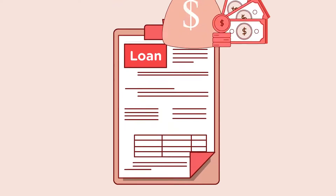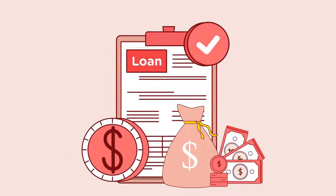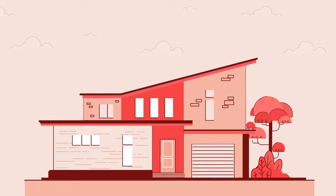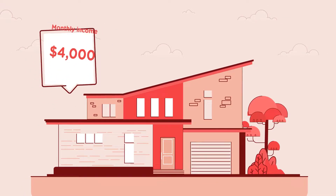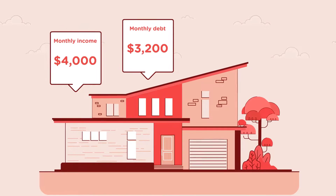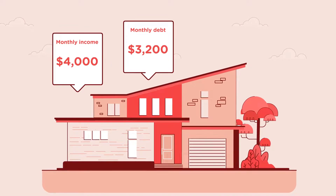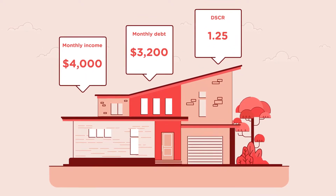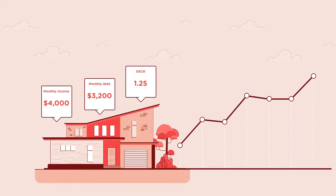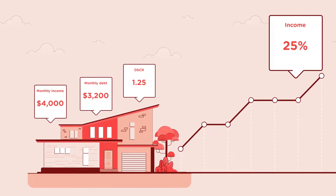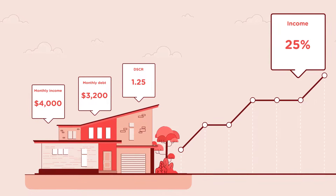The higher this ratio is, the easier it is to obtain a loan. Let's say a borrower wants to buy a property that has a monthly income of $4,000 and a monthly debt of $3,200. In this example, the DSCR is 1.25. This means the property generates 25% more income than is needed to pay the debt obligation.